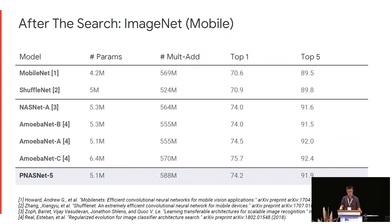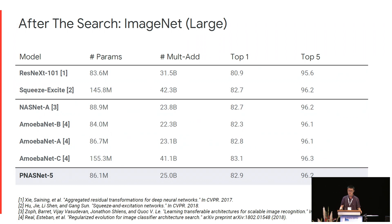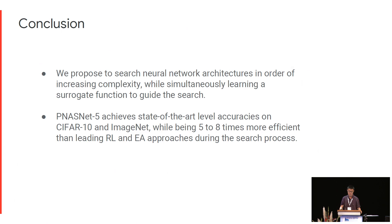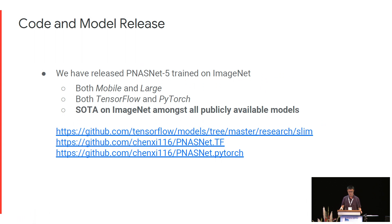For ImageNet, we consider two settings. In the mobile setting, we restrict the number of trainable parameters and multi-add operations under a budget. In the large setting, we drop this constraint and compare against the best models. PNASNet 5 holds the highest accuracy around the same network complexity. We have released code and pre-trained models for PNASNet 5 on ImageNet, with both TensorFlow and PyTorch implementations available. We firmly believe using our model as an image feature extractor will benefit your task.